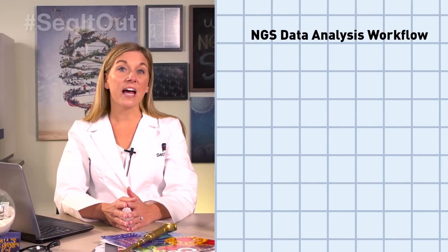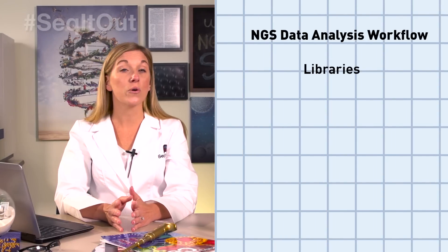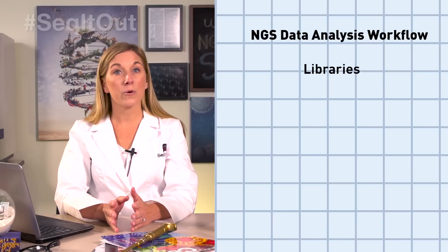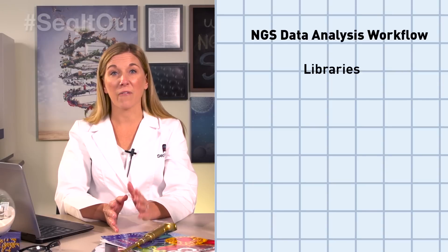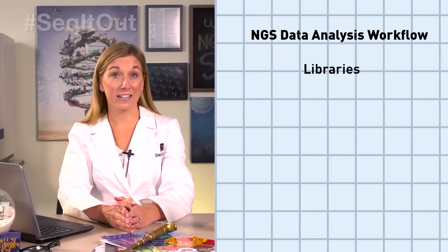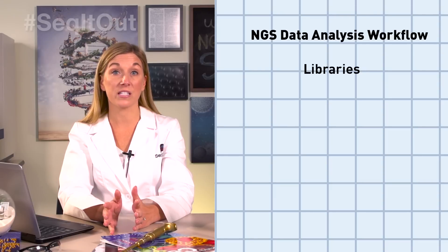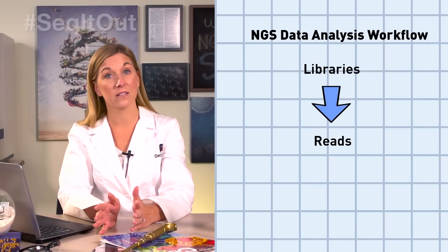The input into NGS systems is a collection of DNA fragments, known as libraries. These library fragments can range in size from about 50 base pairs to 1,000 base pairs, depending on the system used. Basically, NGS systems sequence library fragments and automatically process the raw sequence data to make sure you get high-quality sequences, referred to as reads.